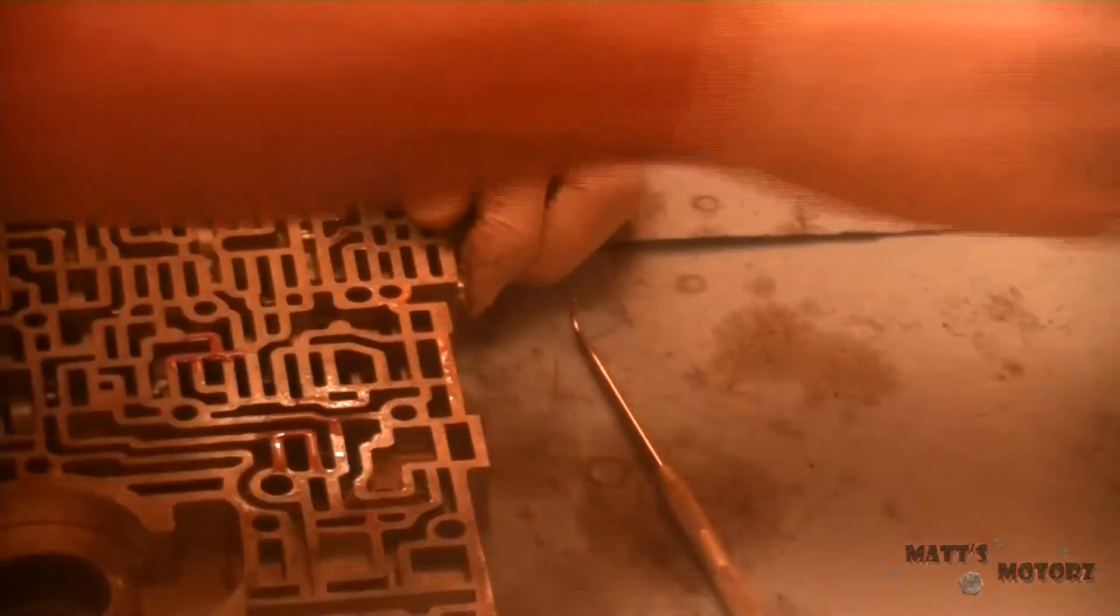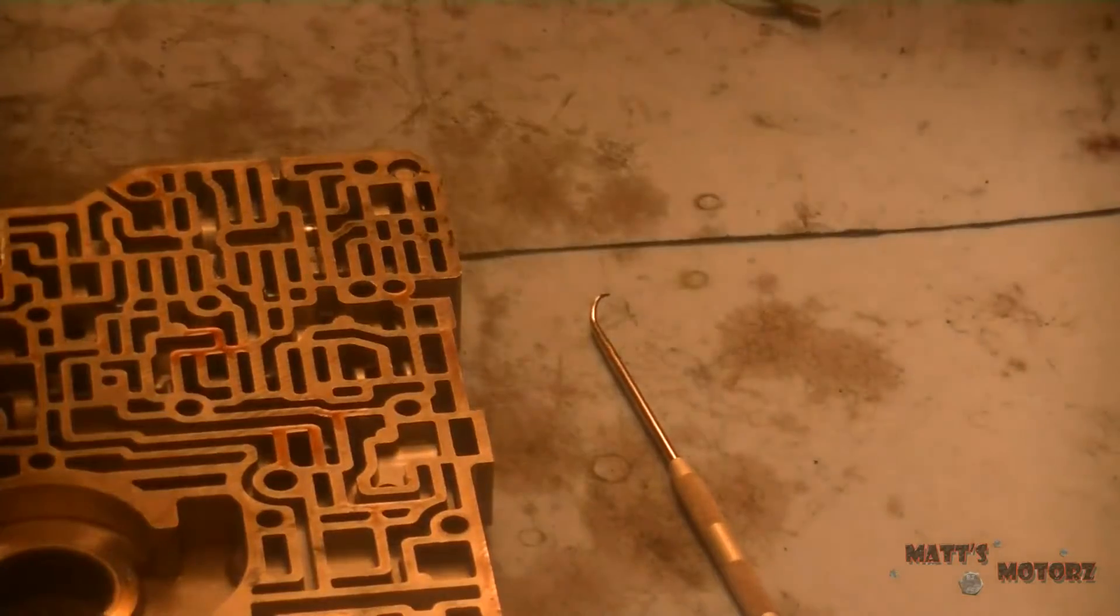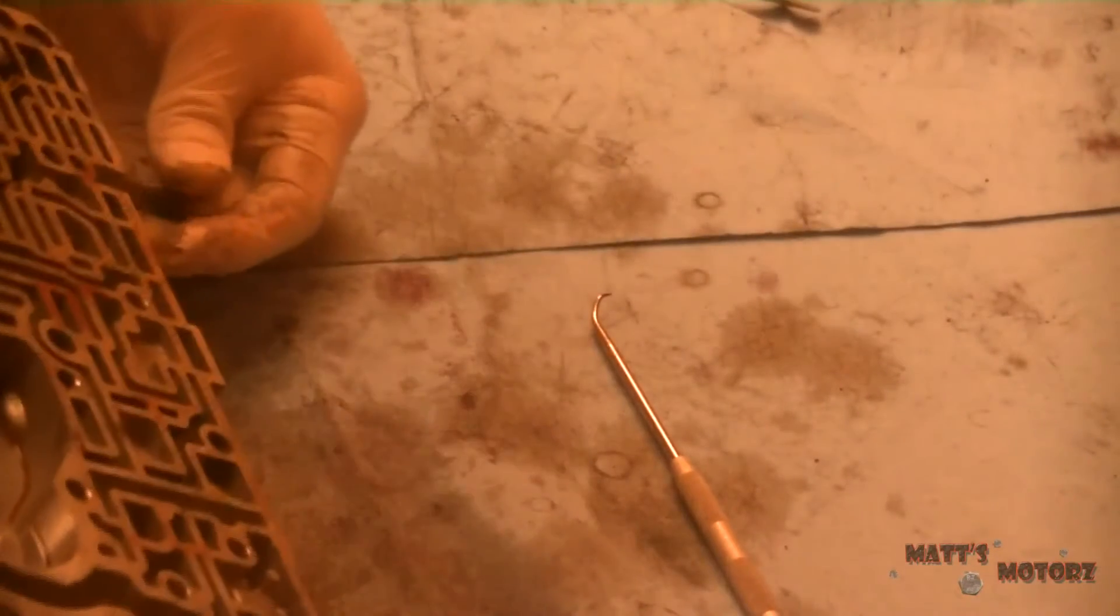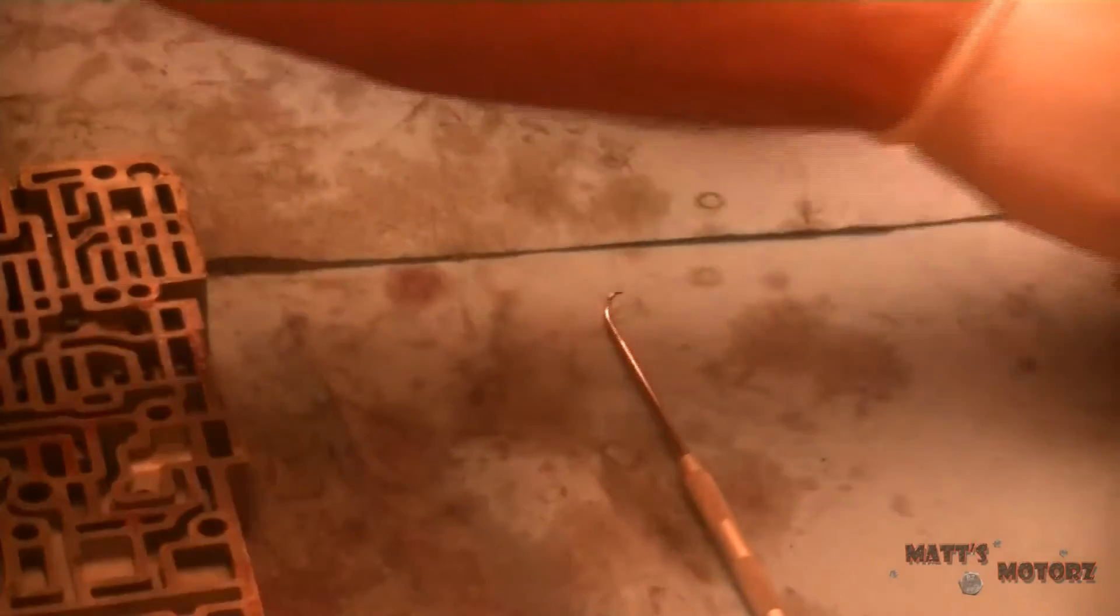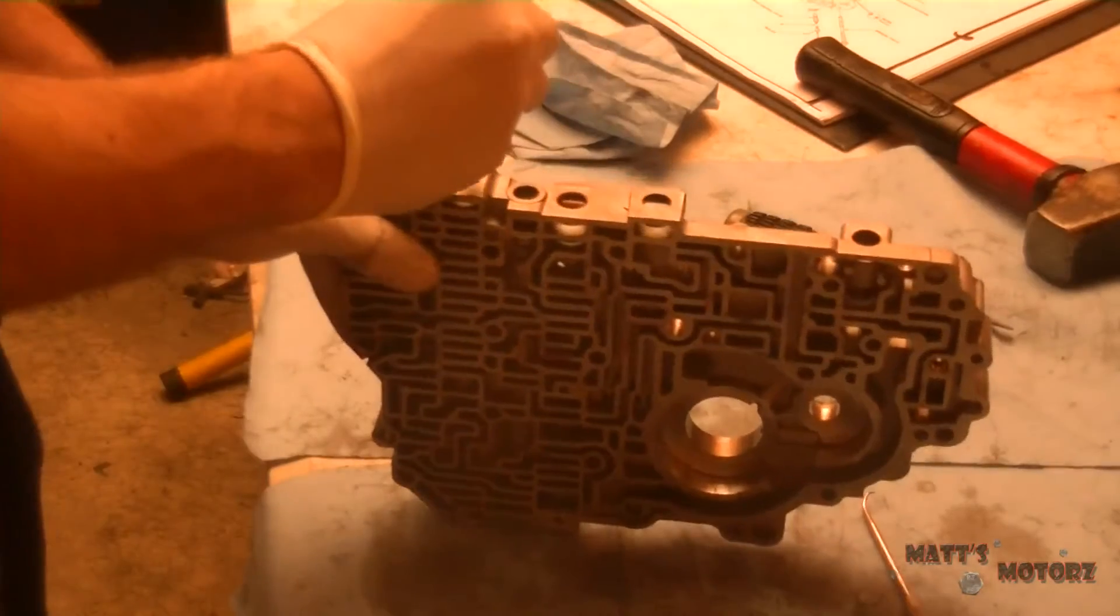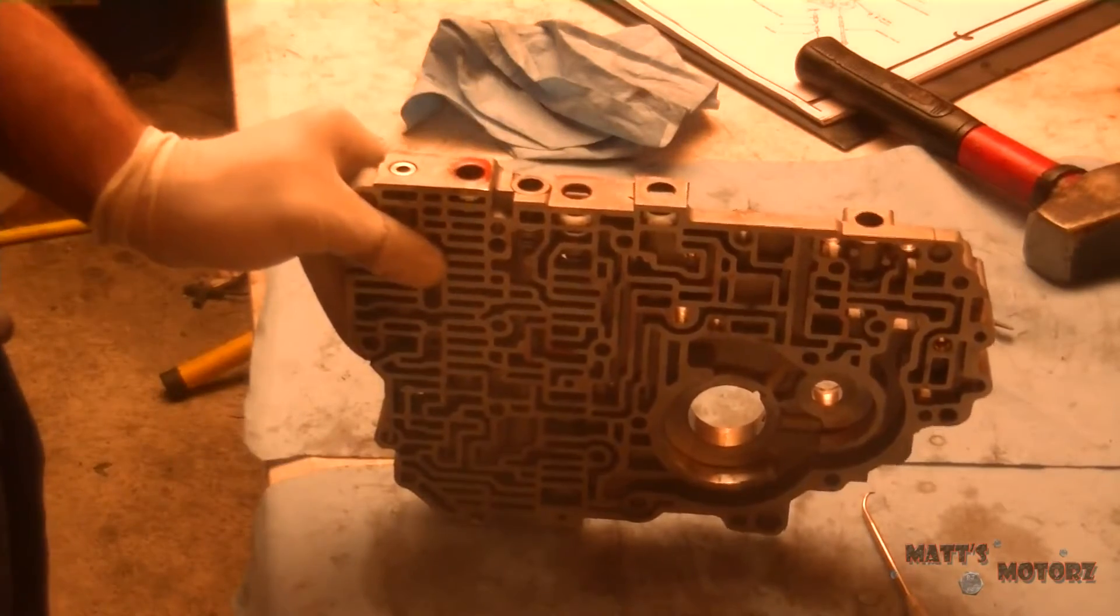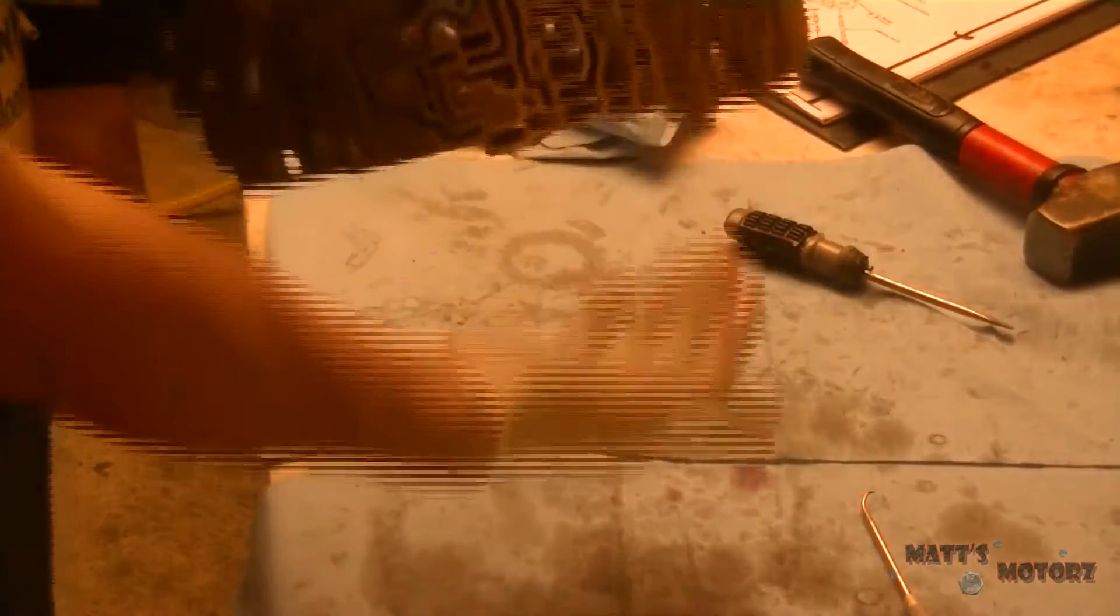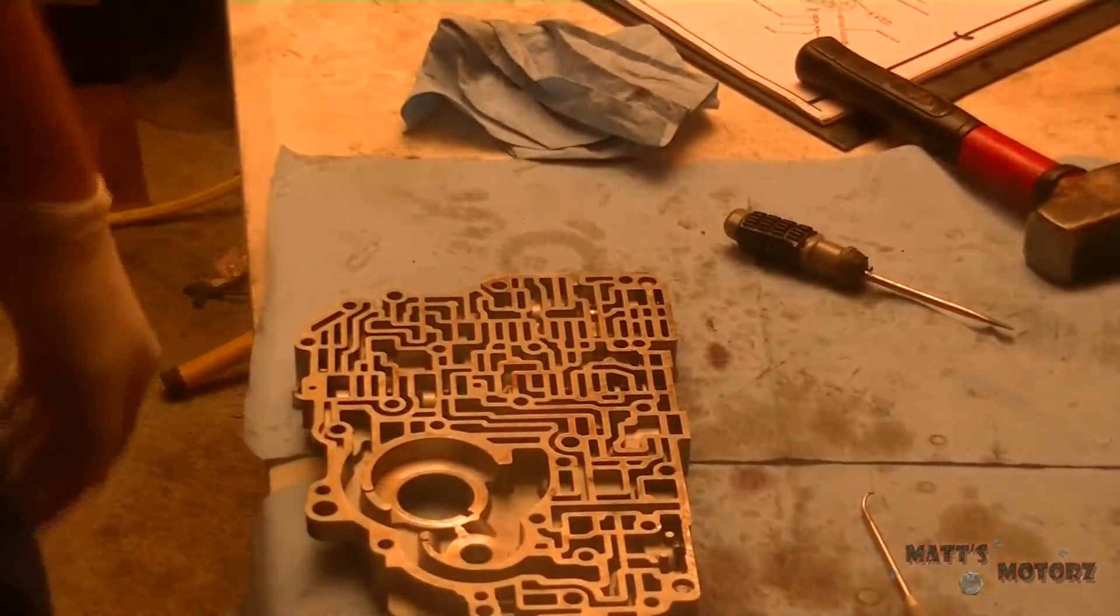This next one's going to be the 1-2 shift valve. This video is just, essentially, going to be me removing all the valves. There's the 1-2 shift valve with the spring, and then we have the second. Oh, here's another example of a valve that's good and drops under its own weight. See, it just goes right down. And then it comes right back out. That's a good valve.